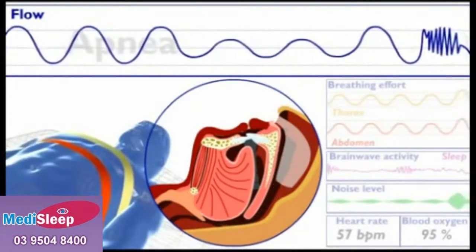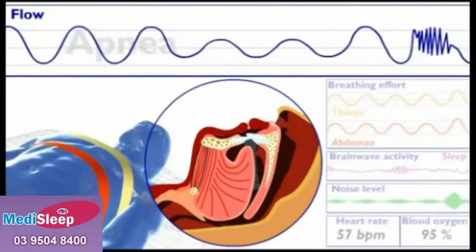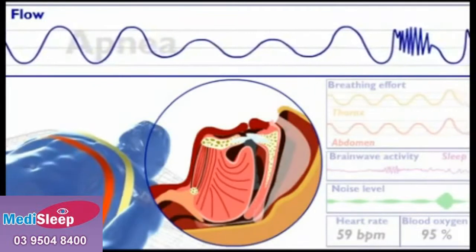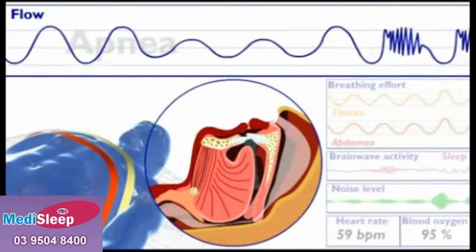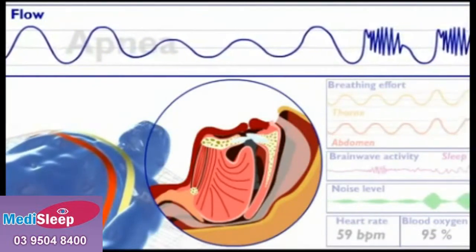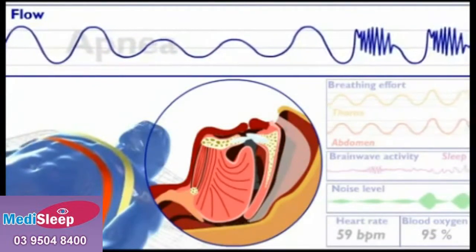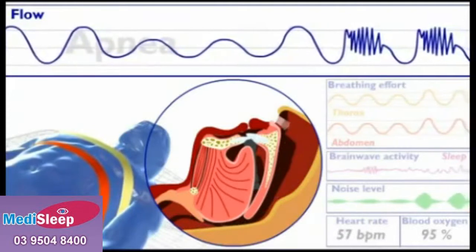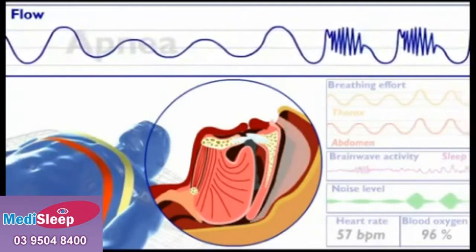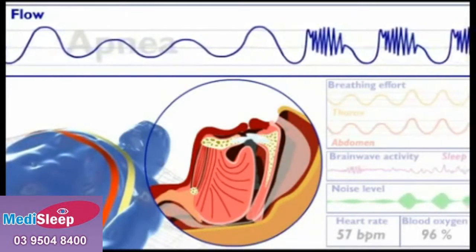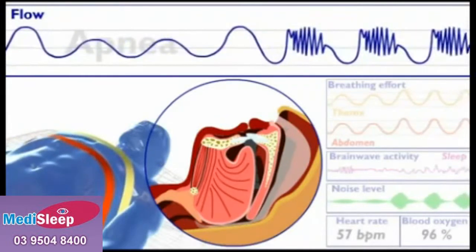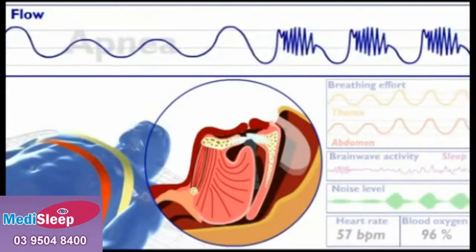As the muscles in the upper airway start to relax, the suction effect of each inward breath tends to draw the soft tissues down towards the back of the airway. Over a series of breaths, the airway progressively narrows and the airflow decreases.